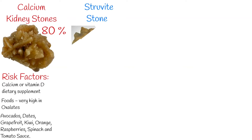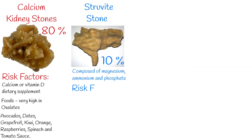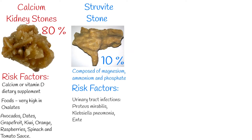Another important stone type is the struvite stone, composed of magnesium, ammonium, and phosphate — also called the triple stone. Struvite stones account for around 10% of cases. Struvite crystals form because of urinary tract infections, altering urinary pH in the setting of urease-producing bacteria.